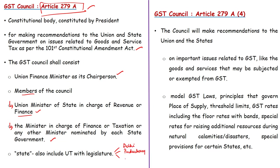Article 279A(4) tells that the GST Council will make recommendations to the union and states on important issues related to GST — such as goods and services to be subjected or exempted from GST, model GST laws, principles governing place of supply, threshold limits, GST rates including floor rates with bands, special rates for raising resources during natural calamities or disasters, and special provisions for certain states.